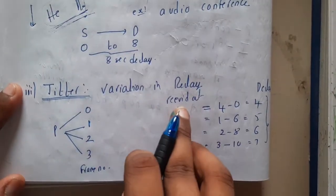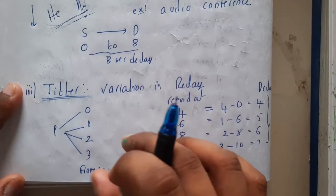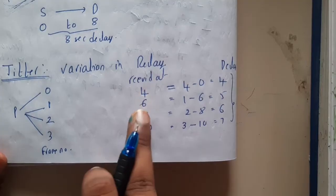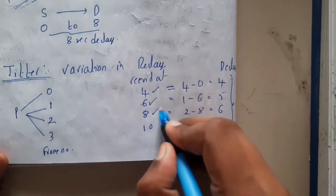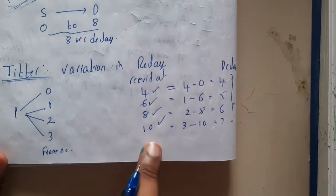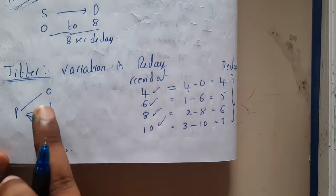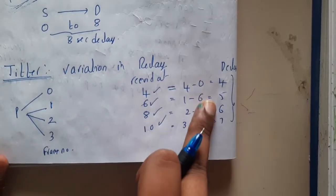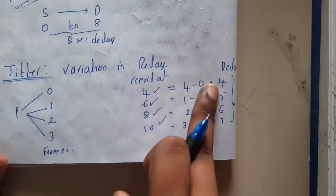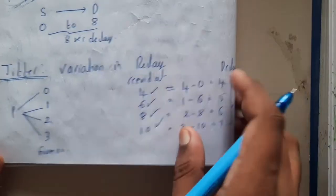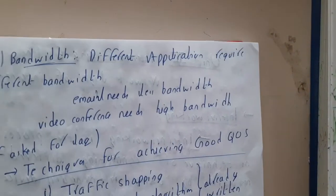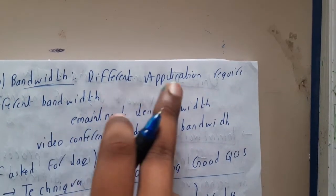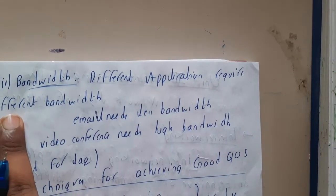Jitter is the variation between transmission rates. Assume you transmitted four frames and the delays were six, four, eight, and ten milliseconds. They should be received at times one, two, three, but if the delays are four, five, six, seven — the delay is different for each. This variation is nothing but jitter.